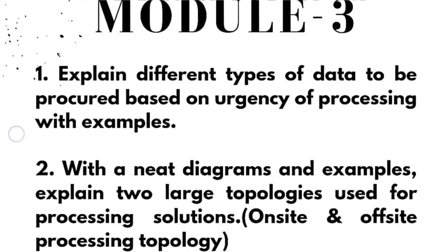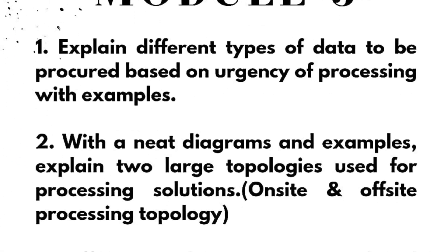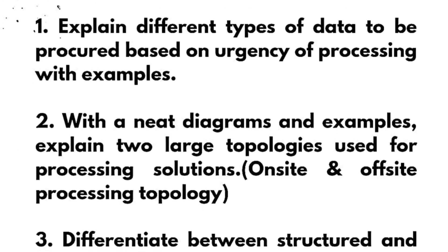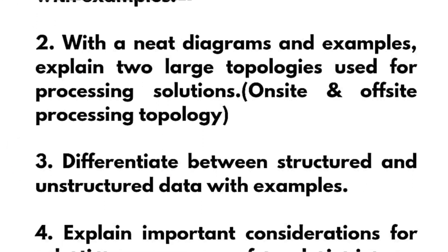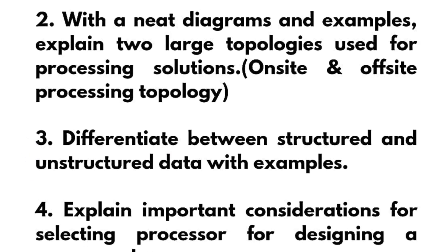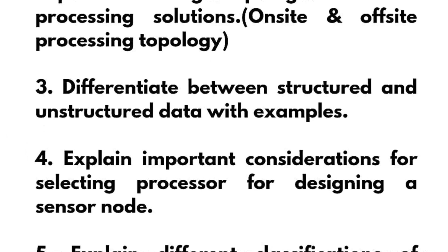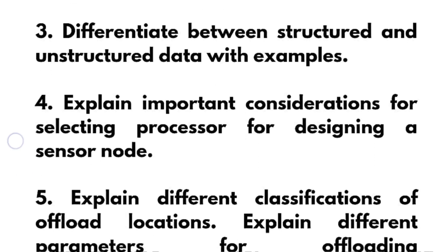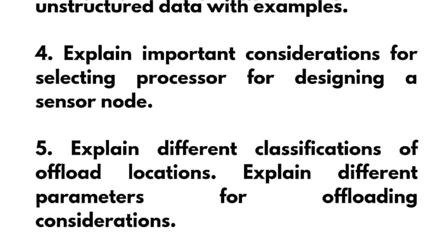In Module 3: explain different types of data to be procured based on urgency of processing with examples. With neat diagrams and examples, explain two large topologies used for processing solutions — that is on-site and off-site processing topology. Differentiate between structured and unstructured data with examples, and explain important considerations for selecting a processor for designing a sensor node.